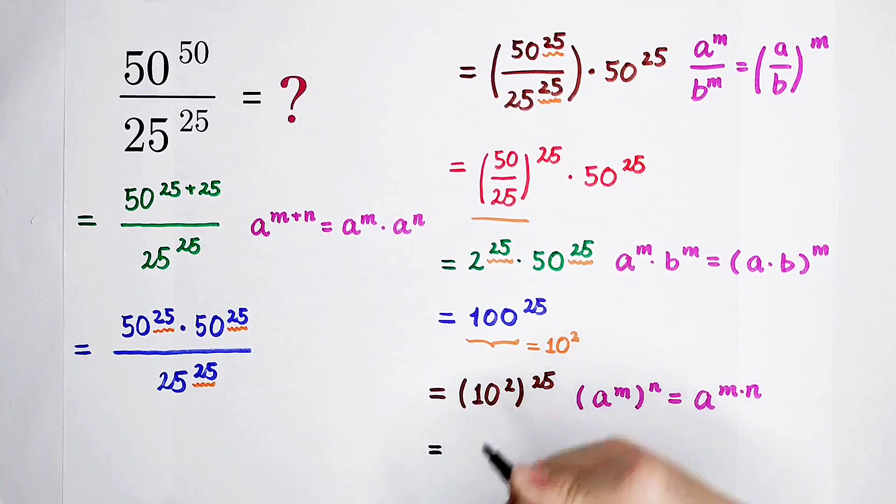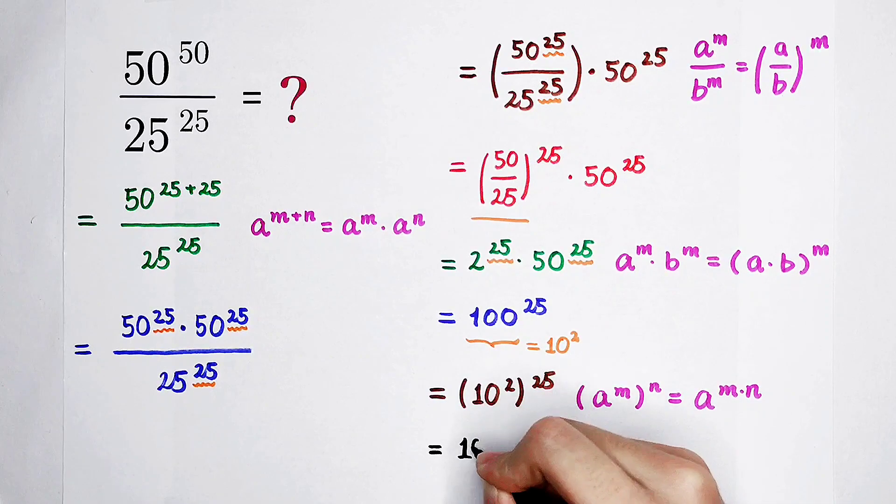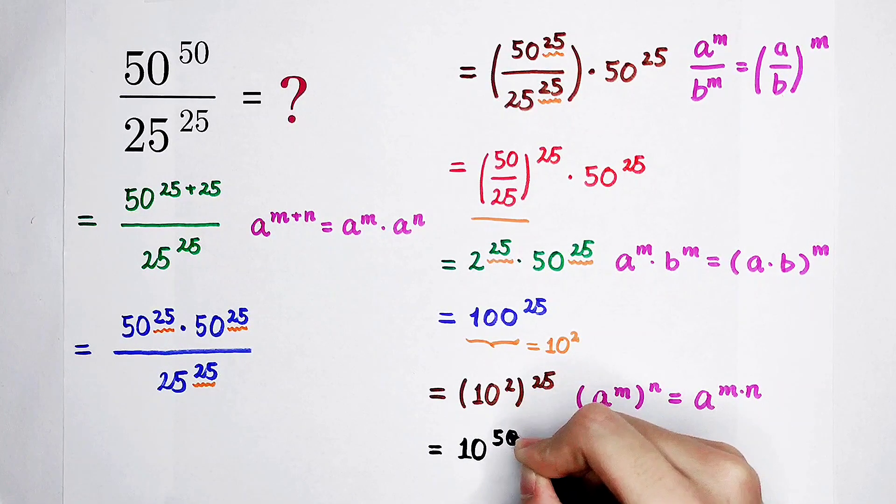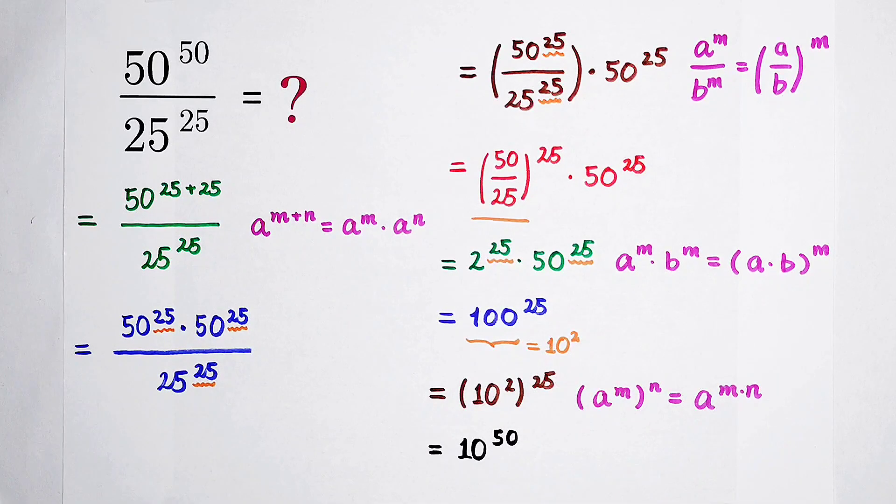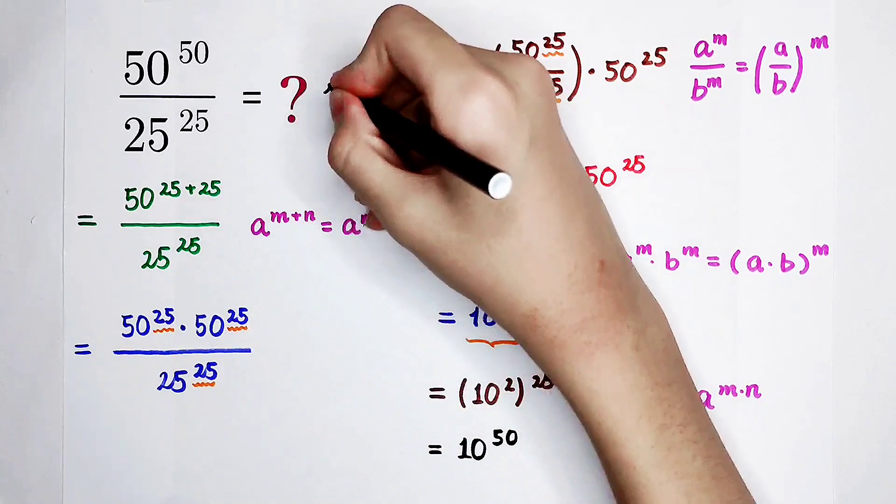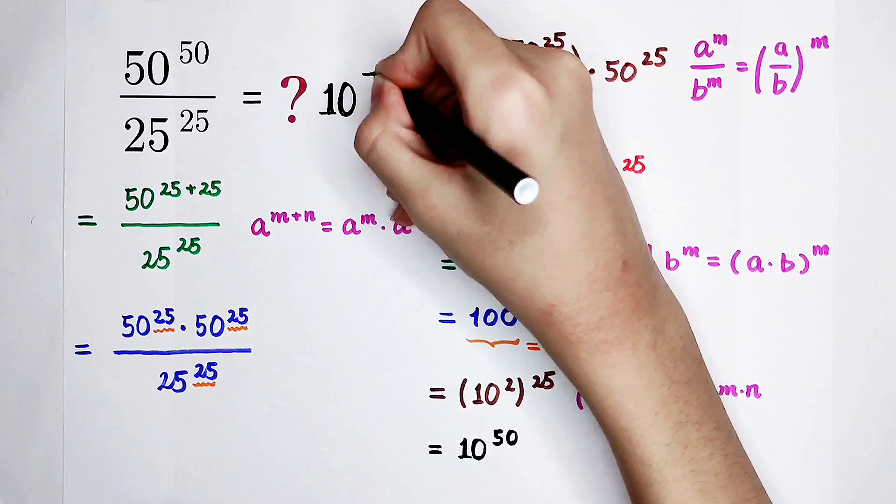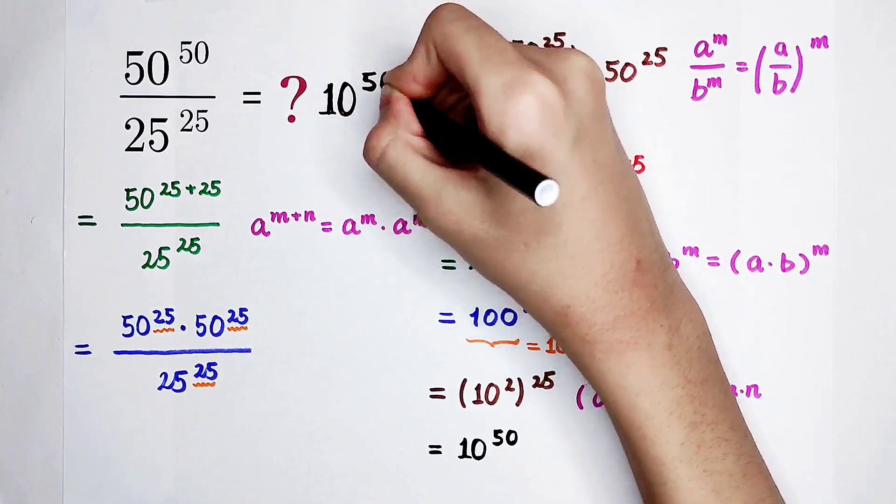So our last step is 2 times 25, the multiplication of these two numbers is 50. So our answer is 10 to the power of 50. So what's our final answer? 10 to the power of 50.